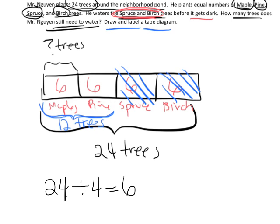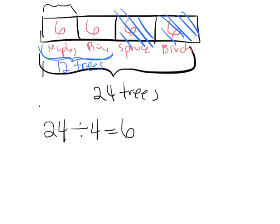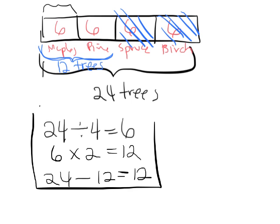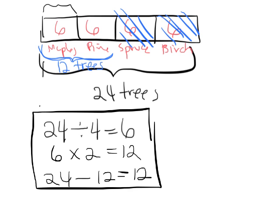And then we did six times two to get 12, and then we did 24 minus 12 equals 12. So that's a series of equations of what we did. First we divided to figure out how many trees of each type, we multiplied by two to figure out how much he watered, and then we subtracted to tell us how much he still needs to water.